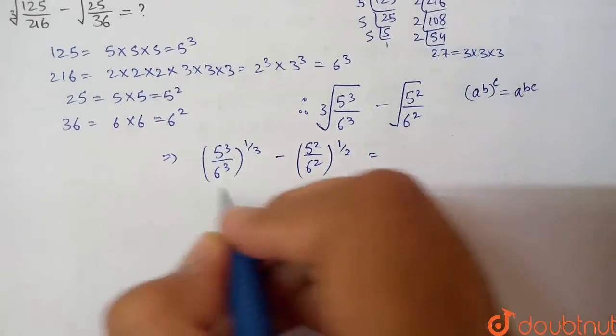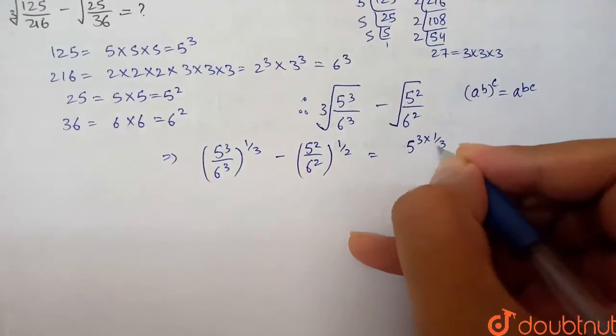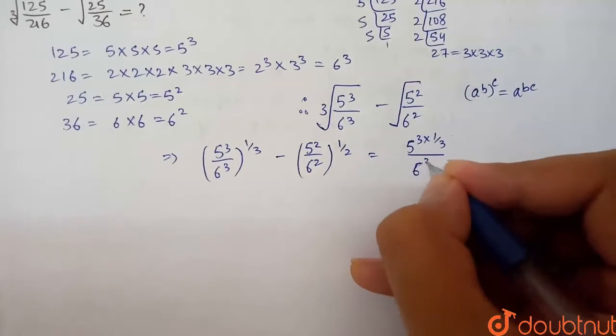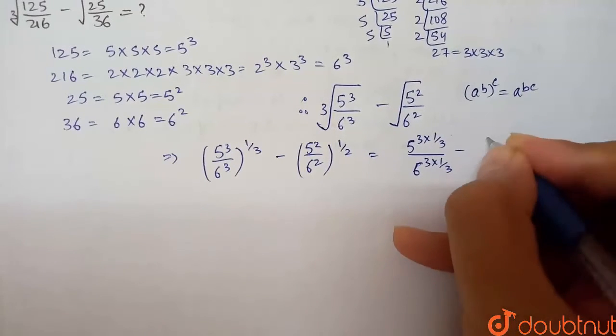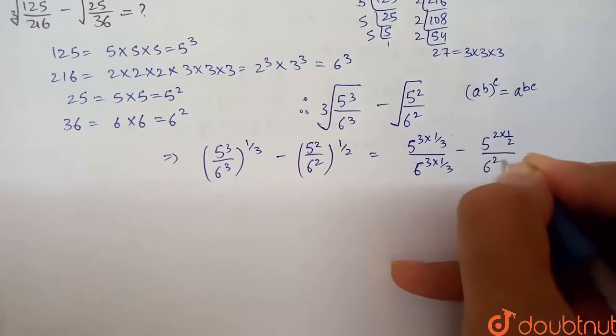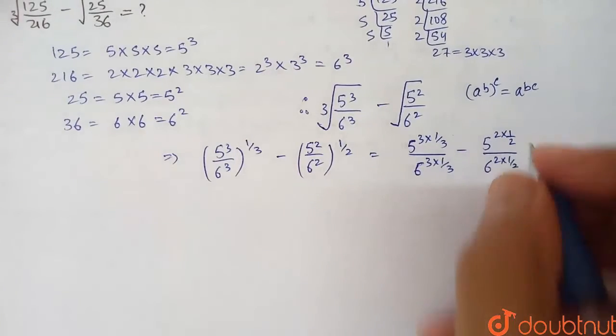Now, as you can see here, power is going to multiply. This is 5 cubed into 1 by 3 over 6 cubed into 1 by 3 minus 5 squared into 1 by 2 over 6 squared into 1 by 2.